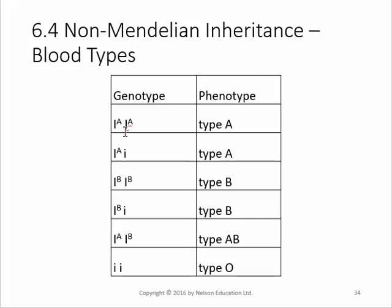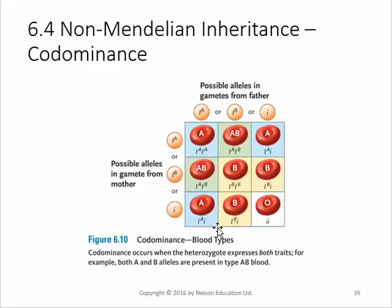Here's the genotype notation: I^A I^A or I^A i gives type A; I^B I^B or I^B i gives type B; I^A I^B gives AB; and ii gives type O. This is doing the Punnett square, and you can see there are three different possible gametes from one parent and from the other, giving you the possible blood type outcomes.